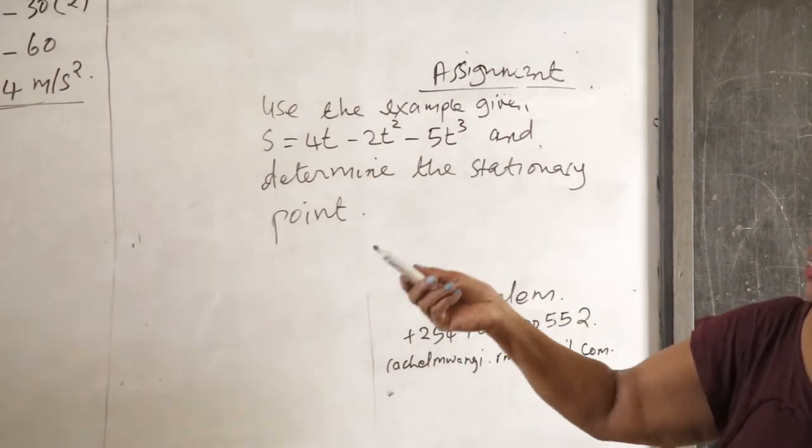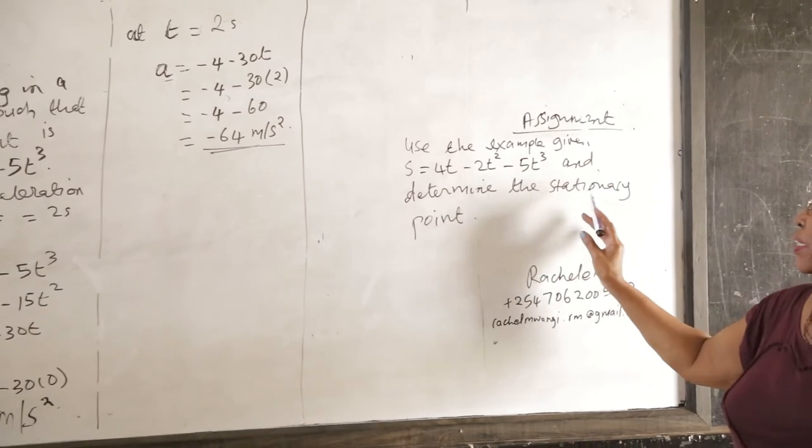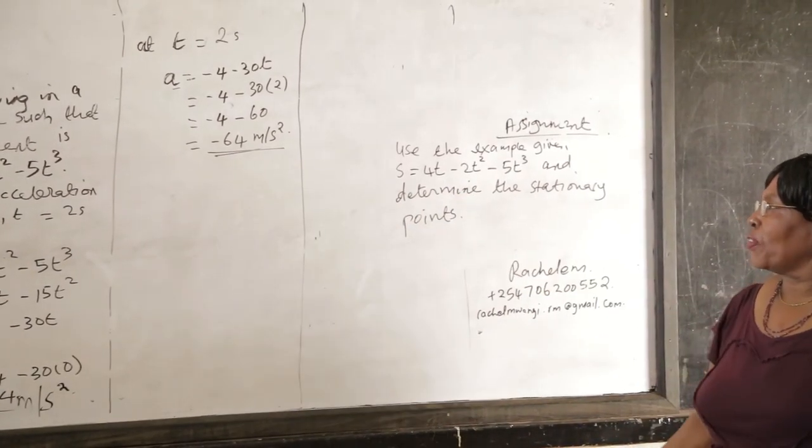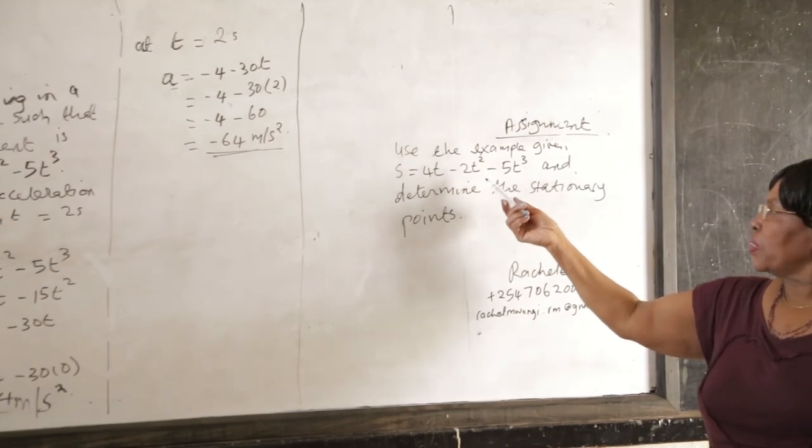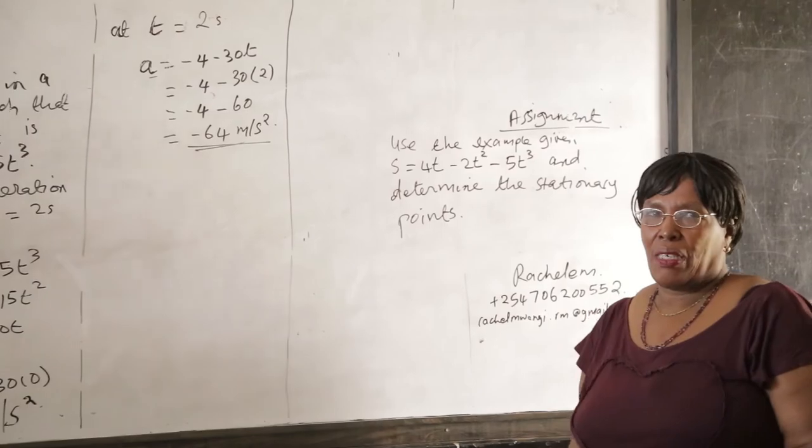The assignment today, use the example given, that is the example that we have here, and all that you have to do is to determine the stationary points on the curve S is equal to 4t minus 2t squared minus 5t cubed.